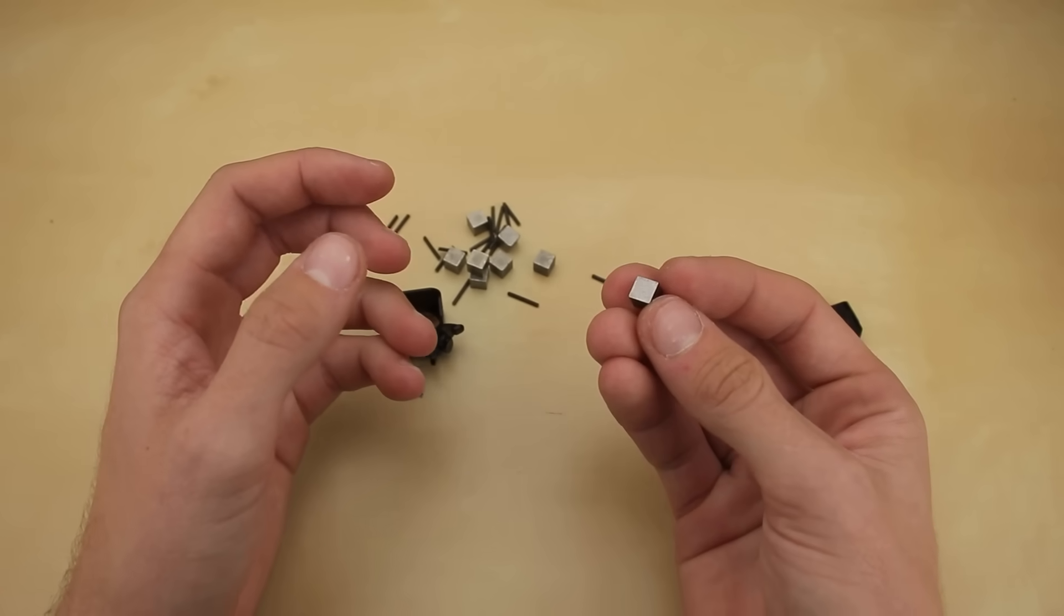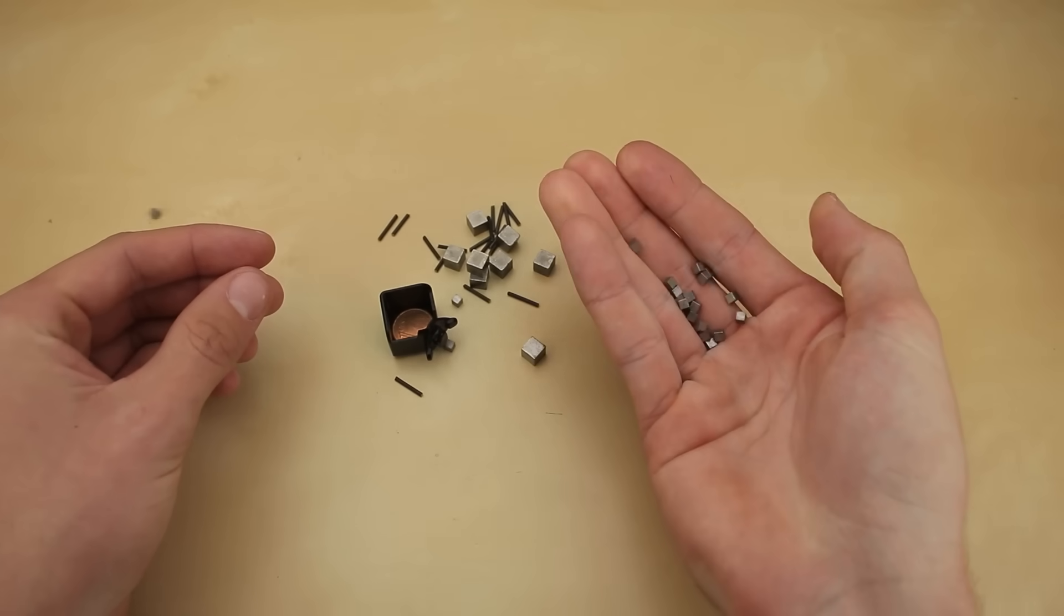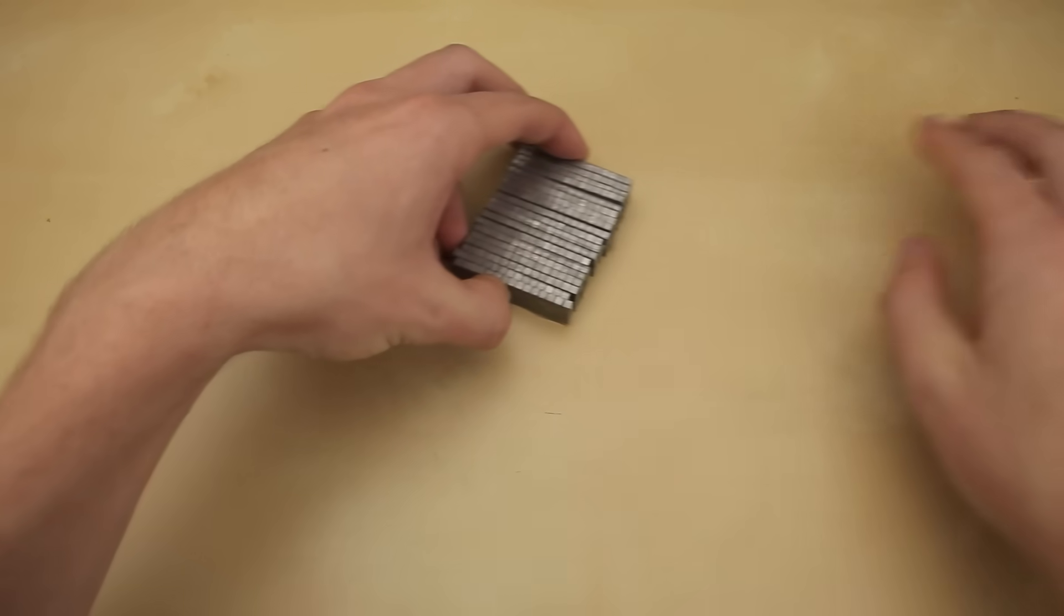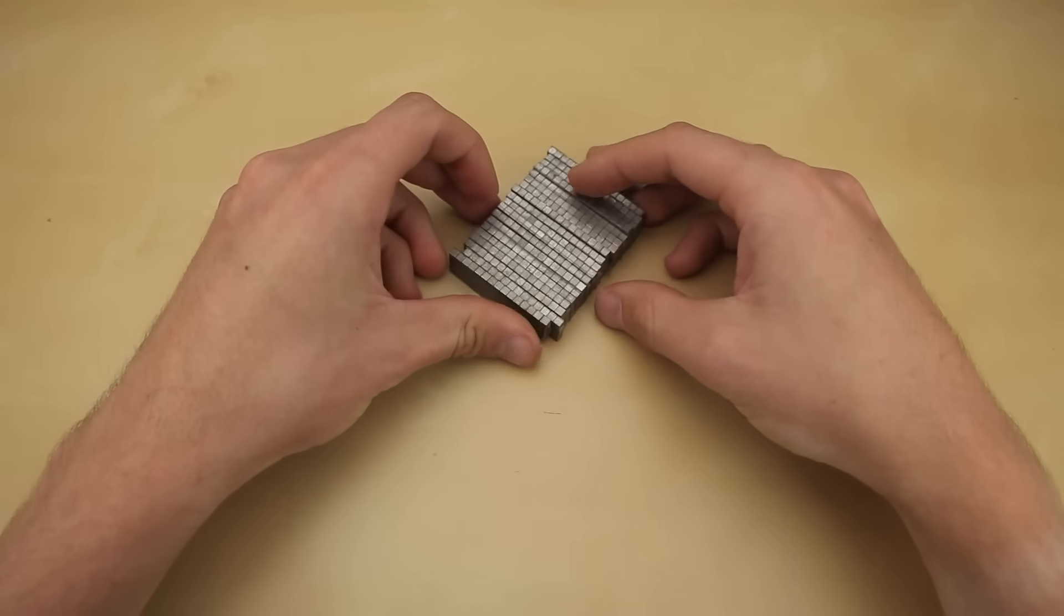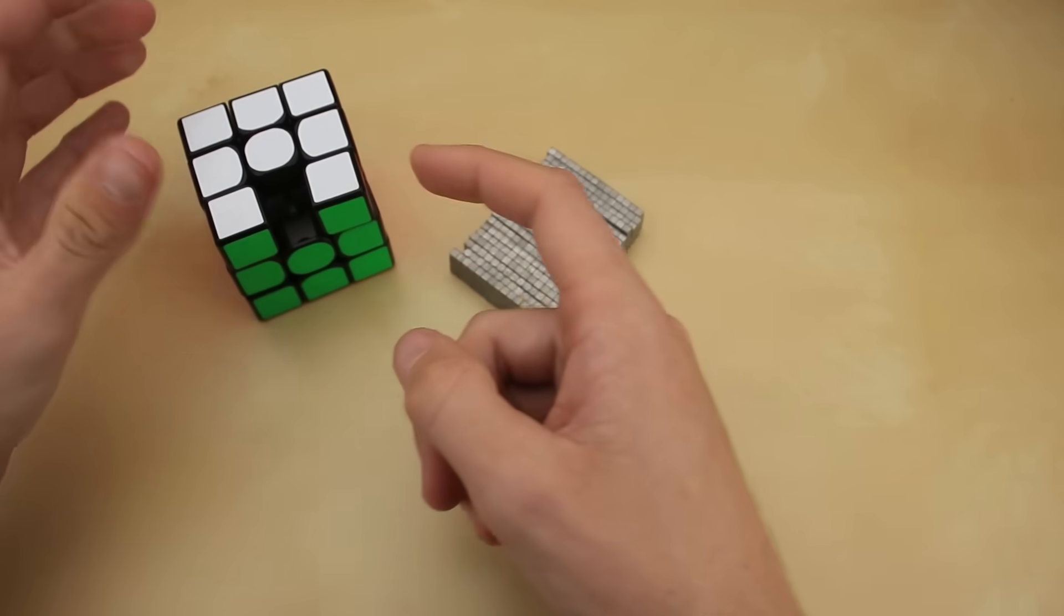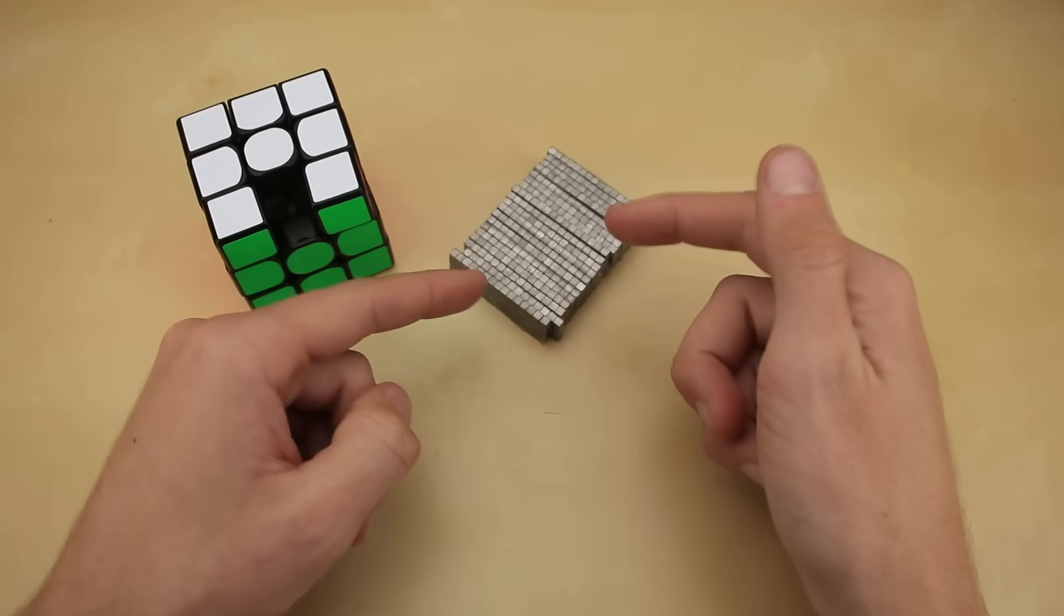So if I want to make this cube even heavier, and I can't fit any more big tungsten cubes, well, then the obvious solution is small tungsten cubes. That's right, I have bought even more tungsten, over 1,200 of these little tiny cubes. I'm going to be going through every single piece on this cube, removing all the coins and little bits of metal, and replacing all of that empty space with tungsten.